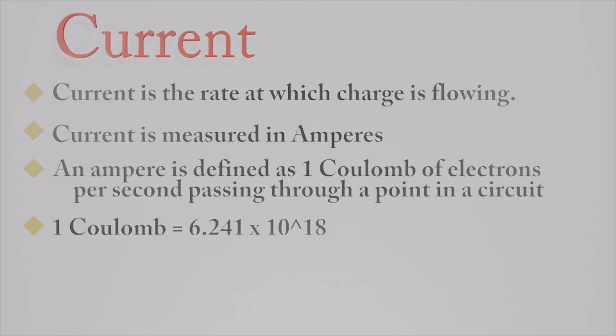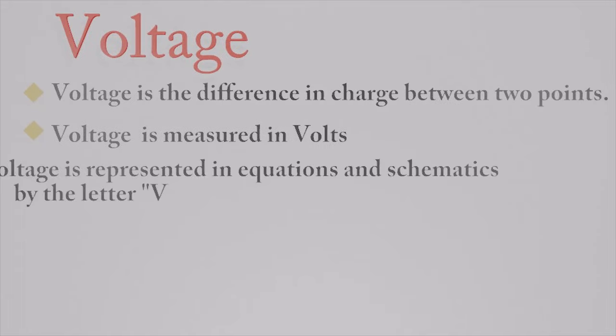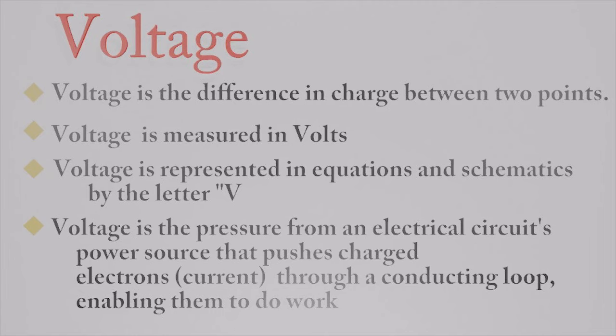Current is the rate at which charge is flowing. Current is measured in amperes. An ampere is defined as one coulomb of electrons per second passing through a point in a circuit. Voltage is the difference in charge between two points. Voltage is measured in volts and is represented in equations and schematics by the letter V.